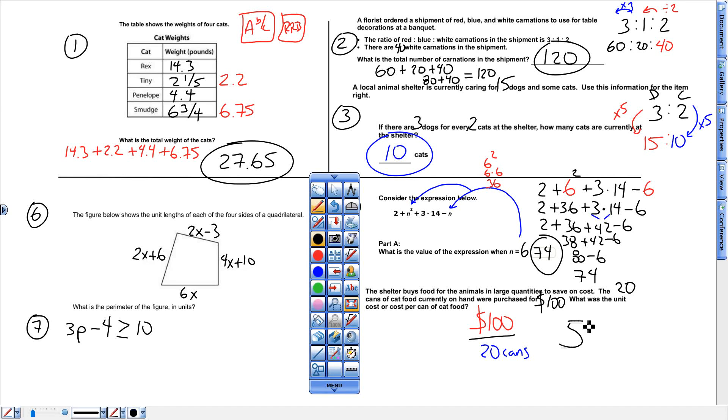Which is 5. Not just 5, not just 5 dollars. It's 5 dollars for every 1 can. Or you could write 5 dollars per can if you want, because that is the unit rate. 5 dollars per can. I would rather you write it as a fraction, 5 dollars per can.